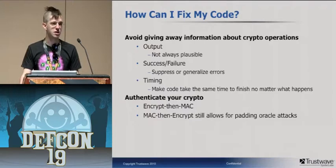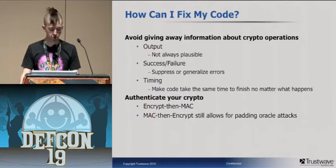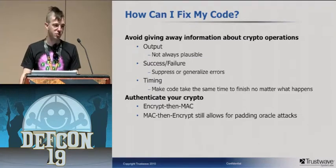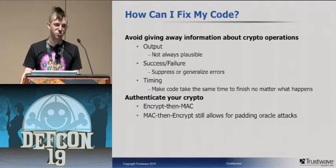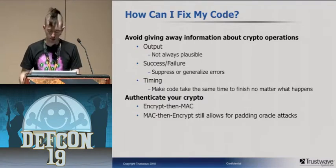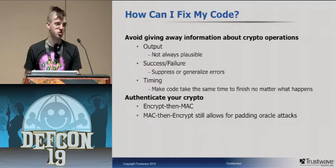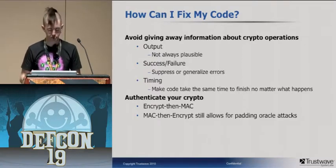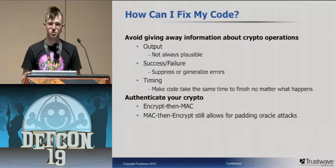Try to suppress any indication of success or failure if you can. Timing information can give away the success or failure of an operation. Authenticating your crypto is a good idea — encryption is good, but if people can fiddle with the message and end up with a valid ciphertext, it will still be subject to whatever operation it was going through. For instance, if you have an encrypted value representing your bank account balance, messing with the ciphertext might yield something better than zero.